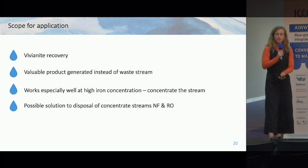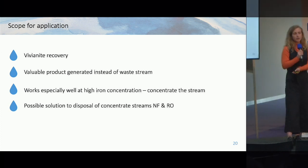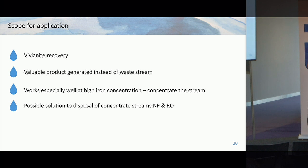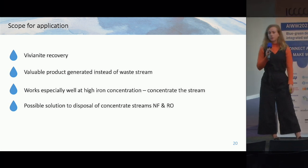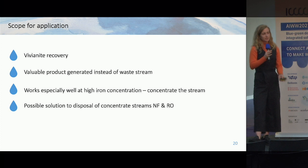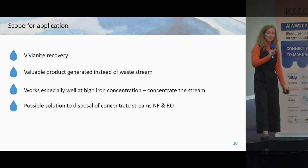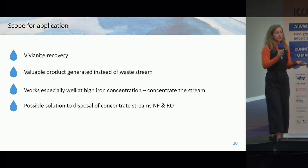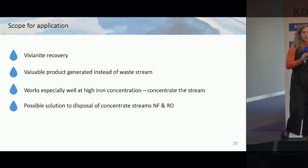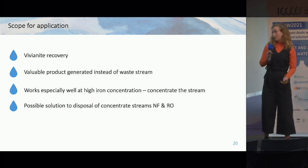The technique works especially well at high iron concentrations. So what if we concentrate the stream prior to the phosphate dosing? With nano-filtration and reverse osmosis, these techniques are becoming competitive options nowadays. A major issue with these is the disposal of the concentrate, and vivianite precipitation might also be an option for addressing that.